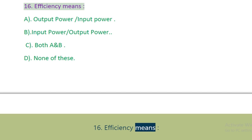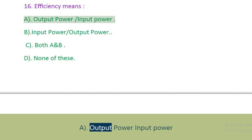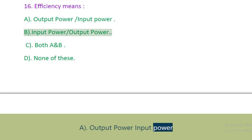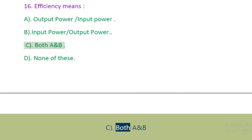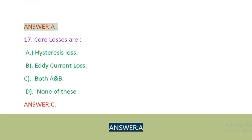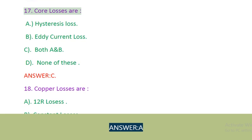Question 16: Efficiency means. A. Output power over input power. B. Input power over output power. C. Both A and B. D. None of these. Answer: A.